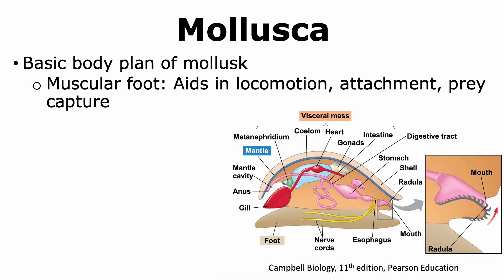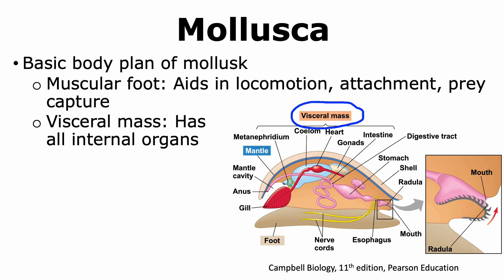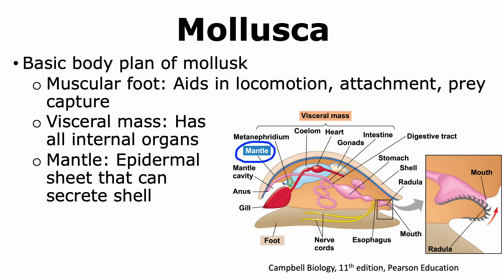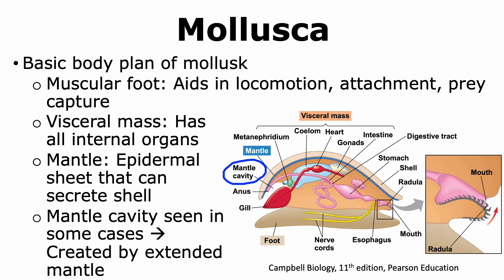The body plan of a mollusk includes a muscular foot that plays important roles in movement, locomotion, and attachment; in some mollusks it is modified to capture prey. Mollusks also have a visceral mass where internal organs are located. They have a mantle, which is an epidermal sheet that can secrete a shell observed in many mollusks. Some mollusks show a mantle cavity, created when the mantle extends, which can cover organs like the gills.